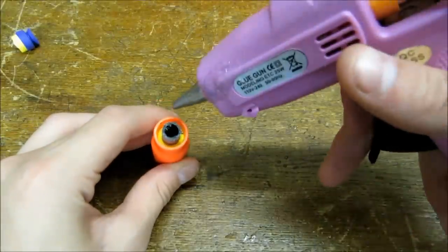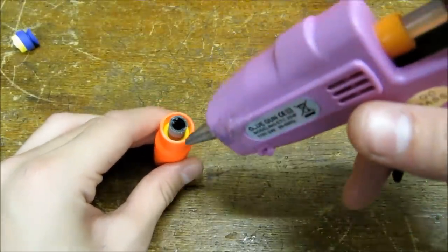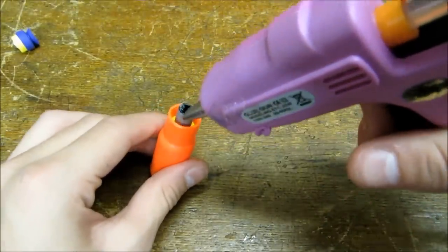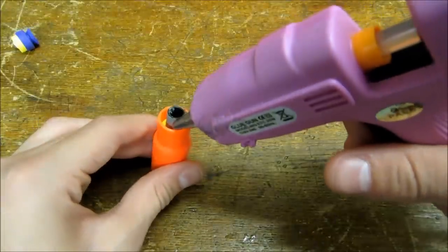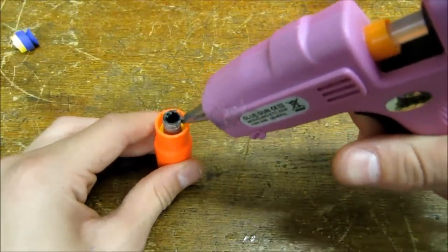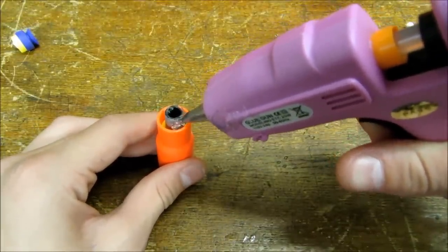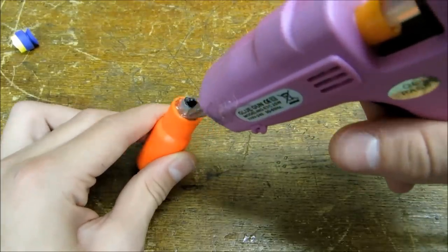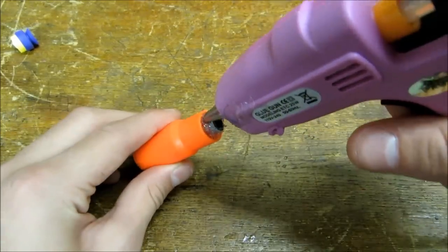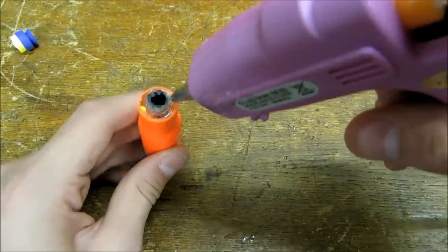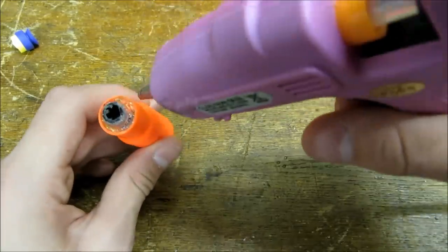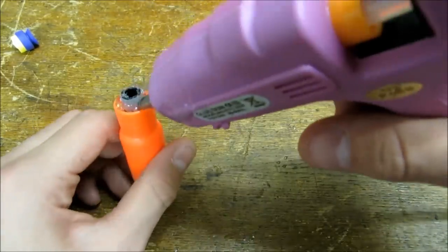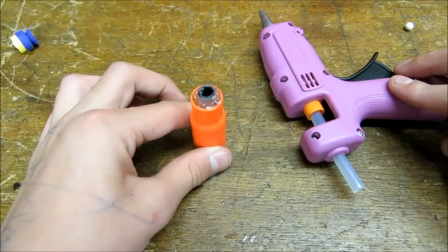Now with your hot glue gun, glue all the way around the inside of the outer pen, like so. You now need to let it dry.